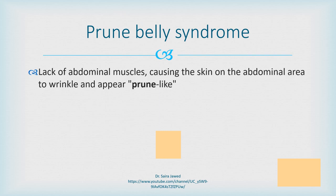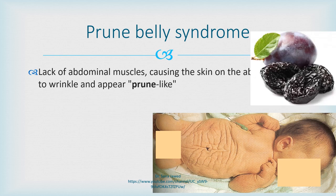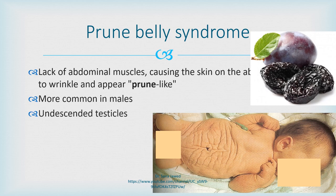Prune belly syndrome is characterized by the lack of abdominal musculature, causing the skin on the abdominal area to wrinkle. The appearance of the newborn's abdomen resembles a dried prune. This syndrome is more common in males and is characterized by undescended testes and urinary tract malformation. Sometimes urethral obstruction results in distension of the abdomen, and the abdominal wall is so thin that organs are visible and can be easily palpated.